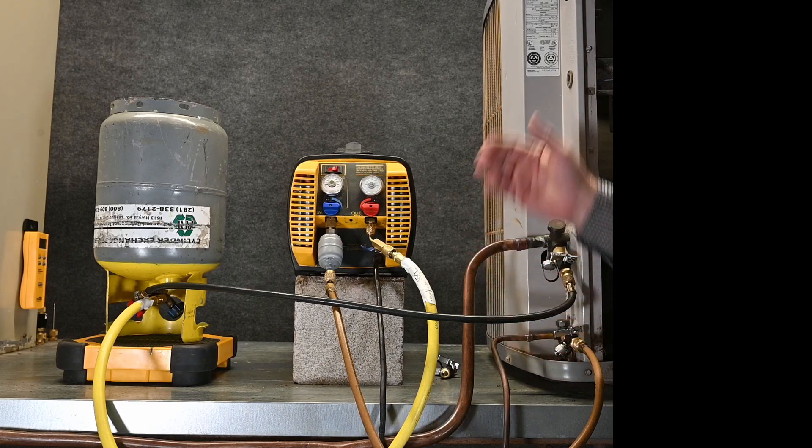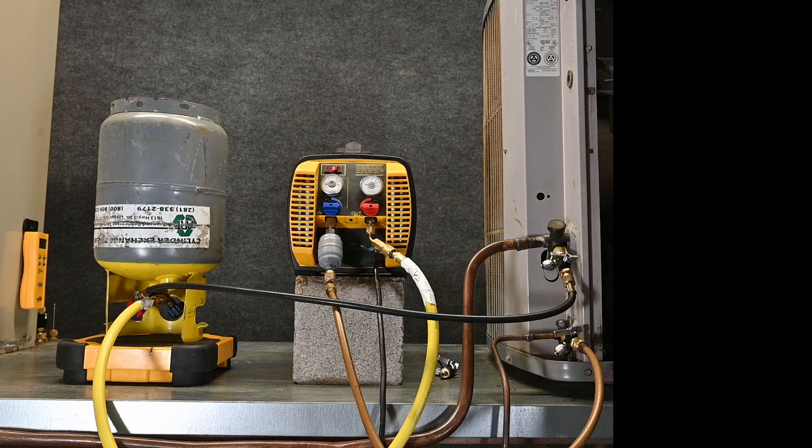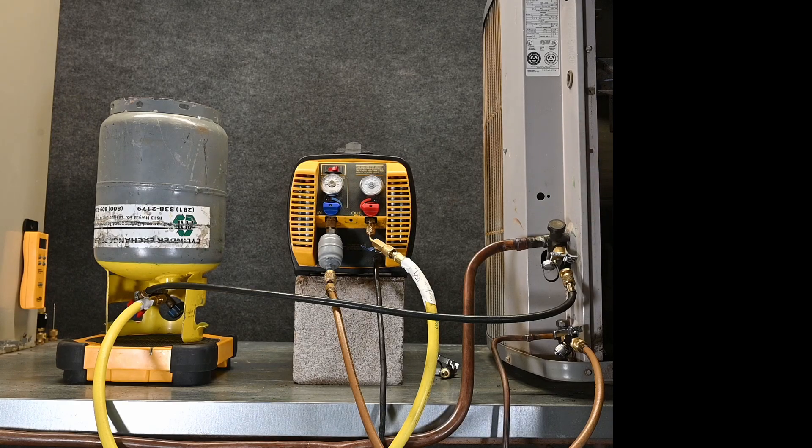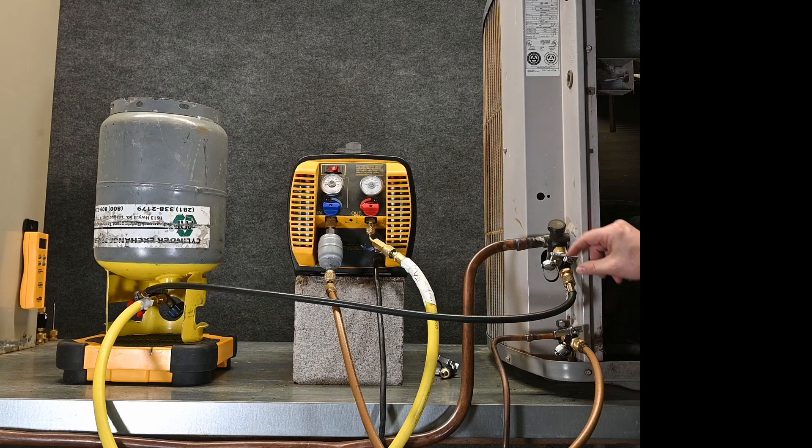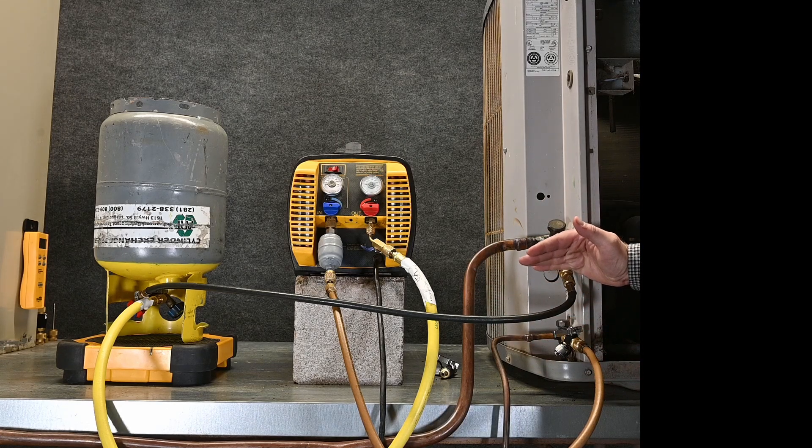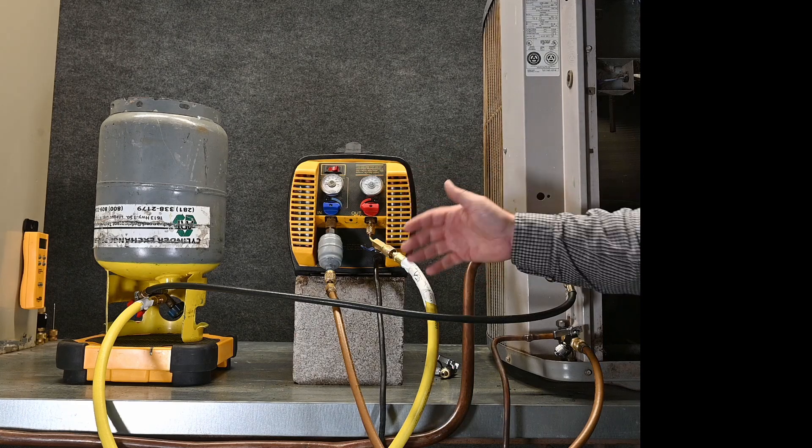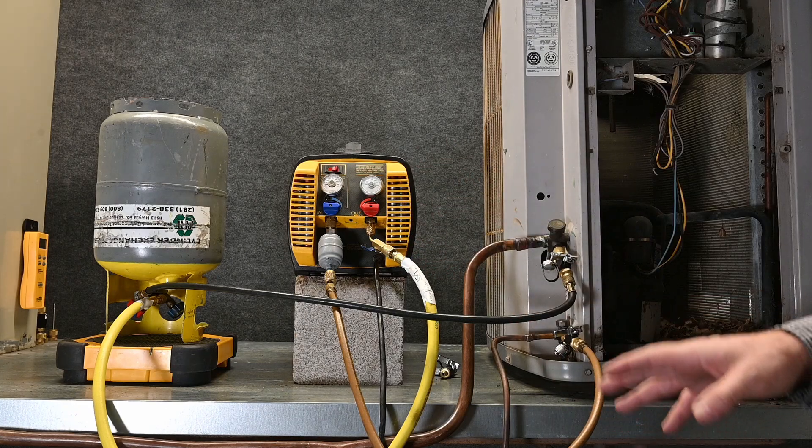Now this wouldn't be applicable in a small unit like this. It would really need to be a very large system with a lot of liquid refrigerant. But as soon as we got all the liquid refrigerant out, we would simply close this valve off right here, and that way we're only pulling that last little bit of vapor. So let's take a look at how that worked.